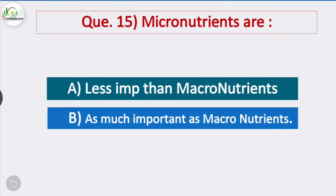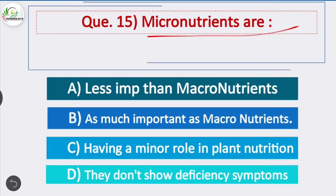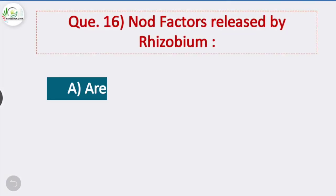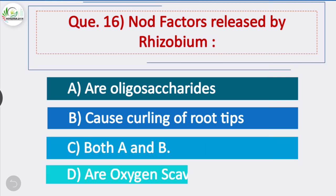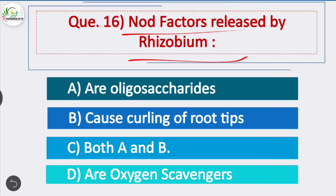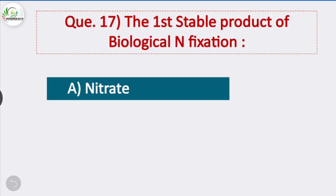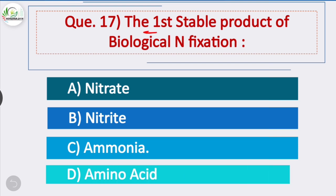Question 15: Micronutrients — the second statement is correct — option B — micronutrients are as much important as macronutrients; macro and micronutrients are similarly important. Question 16: Nod factors released by Rhizobium — option C is correct — both A and B. Nod factors released by Rhizobium are oligosaccharides and they cause curling of root hairs.